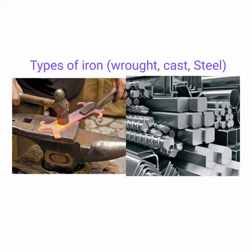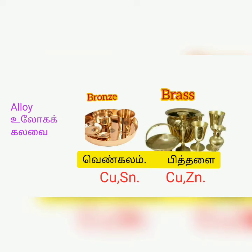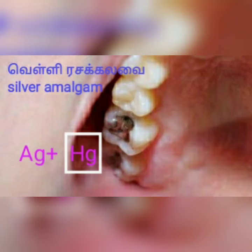Alloy. Alloy is a mixture of metals and non-metals. Bronze: copper with tin. Brass: copper with zinc. Amalgam. When mercury mixes with any metal, it is called its amalgam.